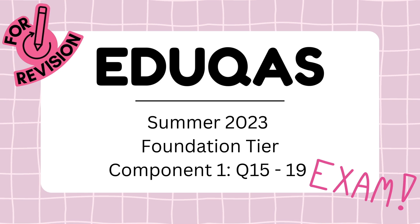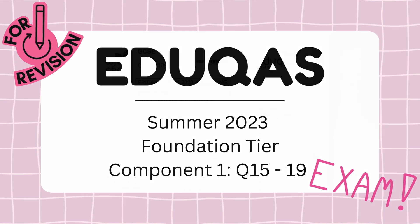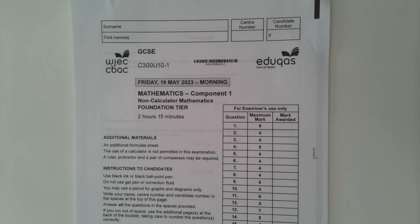Hi there, this video is an exam paper walkthrough of the Educast GCSE Mathematics Foundation Tier Component 1 paper from Summer 2023. This paper is worth 120 marks in total and this is the fifth video of six. It will focus on questions 15 to 19 which account for 18 of these marks. Educast Component 1 papers are non-calculator papers so a calculator should not be used.